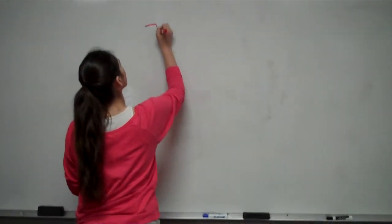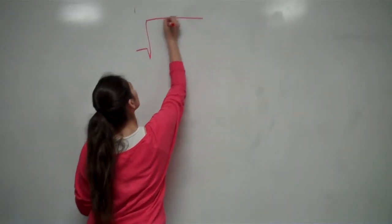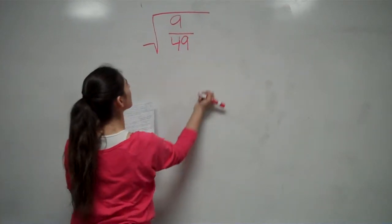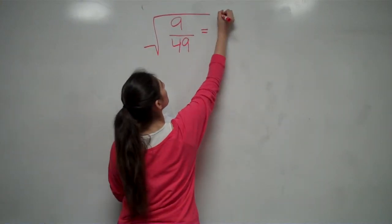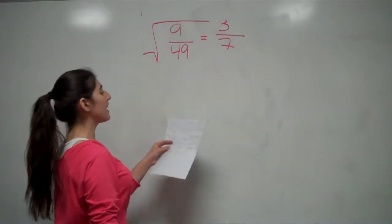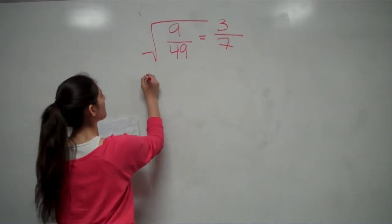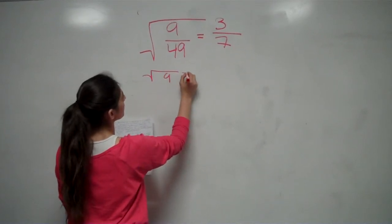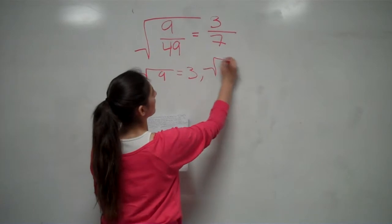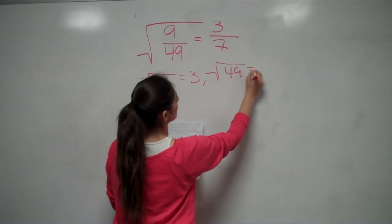We'll start by simplifying the square root of 9 over 49, and that simplifies down to 3 over 7. You get this answer by taking the square root of 9, which equals 3, and the square root of 49, which equals 7.